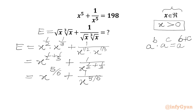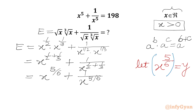Now x is positive, so we are going to get E positive for sure. I will consider a substitution here: let x^(5/6) = y. Now I will raise both sides to the power of 6, using the law (a^b)^c = a^(bc).